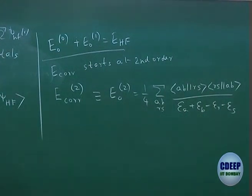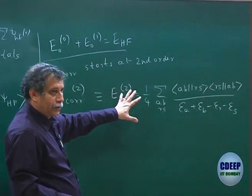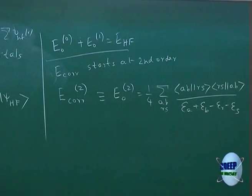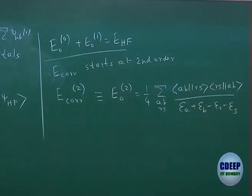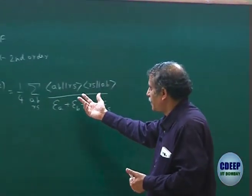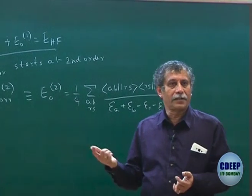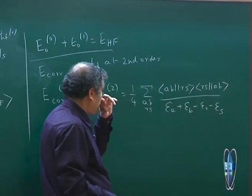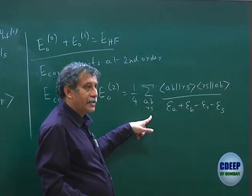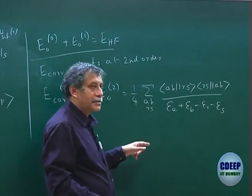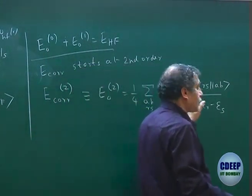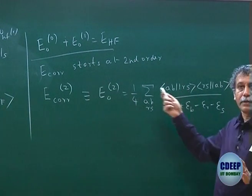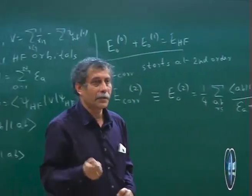All of you should be able to derive this. We initially wrote all excited determinants of H naught but found that singly excited determinants do not contribute because of Brillouin's theorem. So only doubly excited determinants contribute, and using Slater rules for doubly excited determinants, we get the two-electron antisymmetrized integrals ⟨AB||RS⟩ squared. We initially had A less than B and R less than S; then we said all A,B,R,S since A=B or R=S anyway gives zero — so no harm. That gives a factor of 1/2 for each pair, hence 1/4 overall.